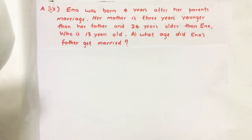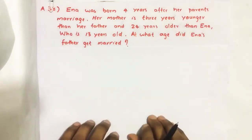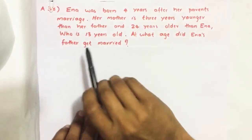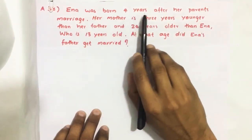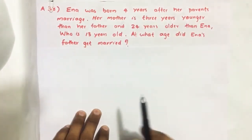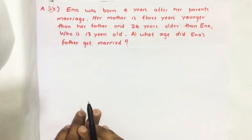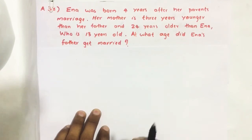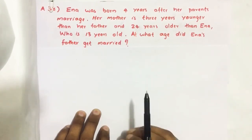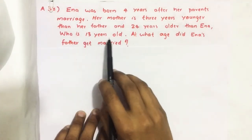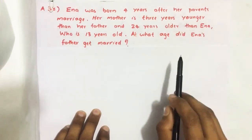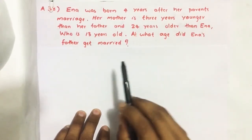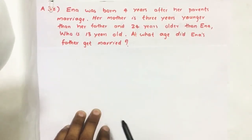Hello everyone. Here I am going to solve 2019 C-SAT question number 38 from question paper series A. Inna was born four years after her parents' marriage. Her mother is three years younger than her father and 24 years older than Inna, who is 13 years old. At what age did Inna's father get married?